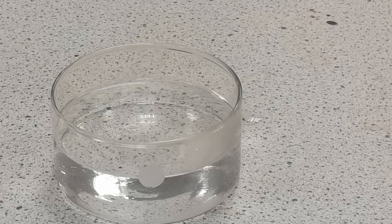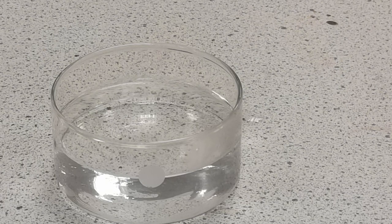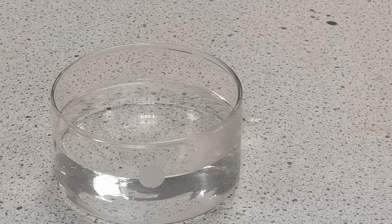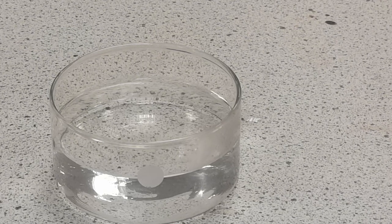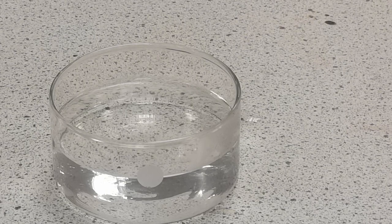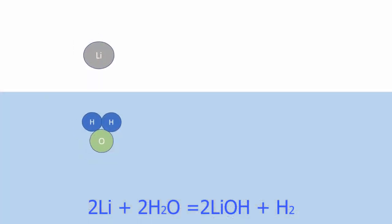You can see it moving around on the surface of the water and you might just see that there are bubbles of hydrogen being given off. You can also see patterns in the water below the metal as the denser lithium hydroxide sinks to the bottom of the container. Within a short time the lithium has completely reacted and disappeared.